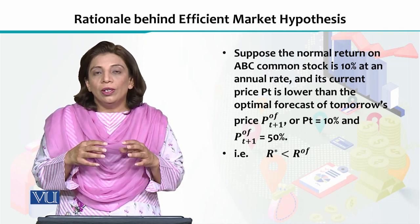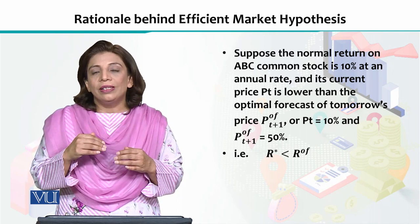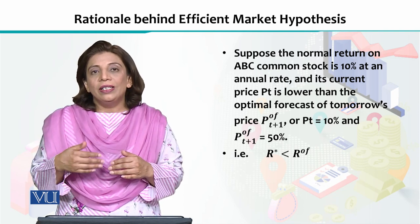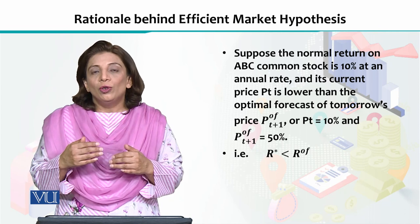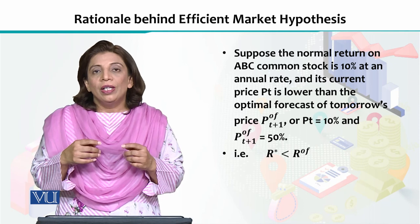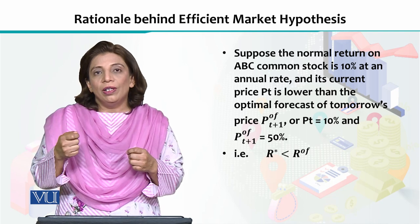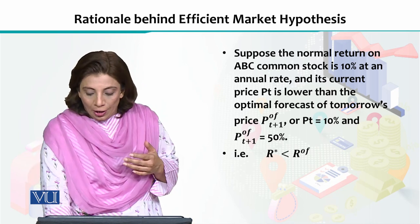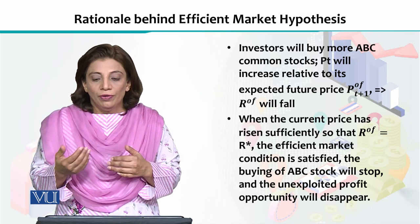If investors come to know that the current price is lower compared to the future price of that particular stock, they will start buying more of it. As a result, the price of that stock will start rising. When the price starts rising, obviously the return will start declining. Eventually, the return becomes equal to the optimal forecasted value of the return.